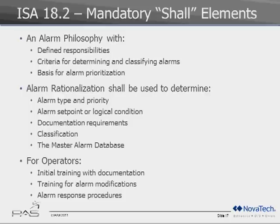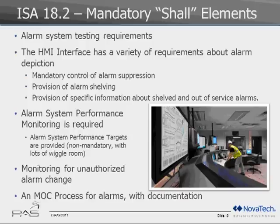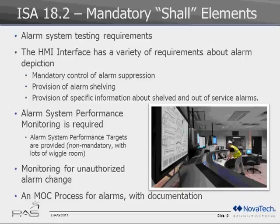Other shall components of 18.2 include operator training — just as in OSHA 1910.119 — so people are aware of and trained to respond to alarms. Additional shall elements cover testing requirements: how often the alarm system is tested, how alarms are depicted on the HMI, and provisions for shelving — a specifically defined term for temporarily taking an alarm out of service to avoid flooding the operator. Also included are performance requirements and an MOC process for changing alarm settings or disabling alarms.